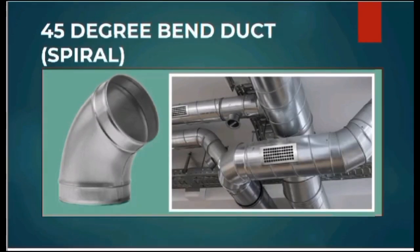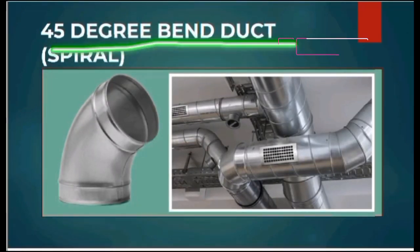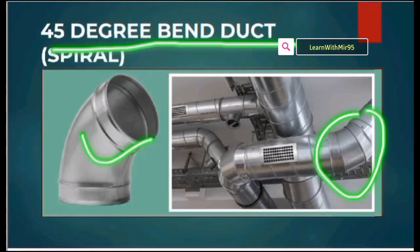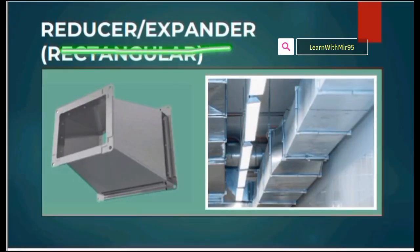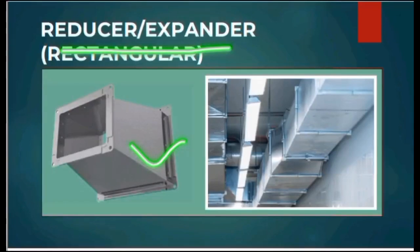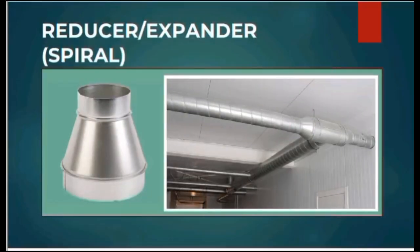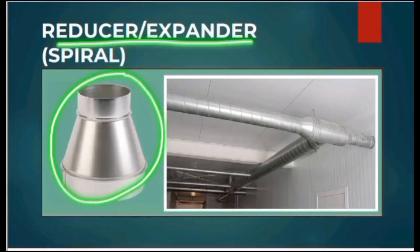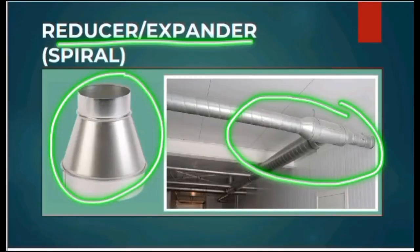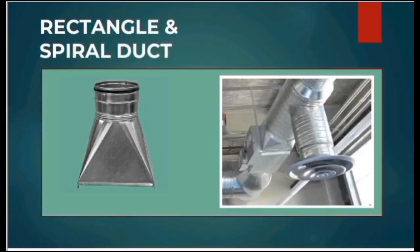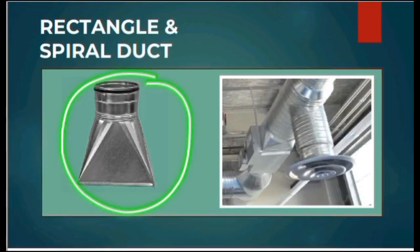We also have a 45-degree spiral elbow for moving the duct in a 45-degree direction. Now we have a rectangular duct reducer, which is used to change the size of duct from large to small or small to large. Similarly, we have a reducer for spiral duct to change the size as per design and requirement. Another piece we have is a rectangular to spiral transition, which is used to change the duct from rectangular to spiral easily as per requirement.